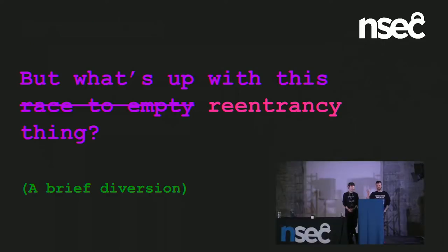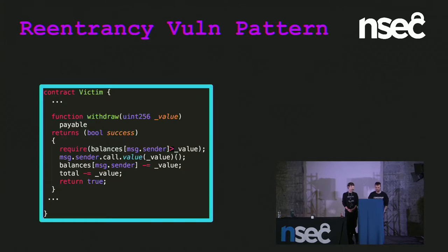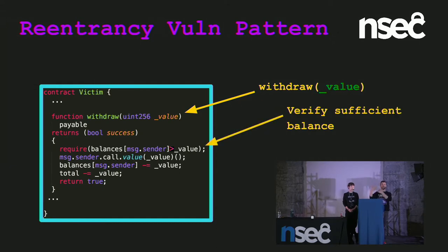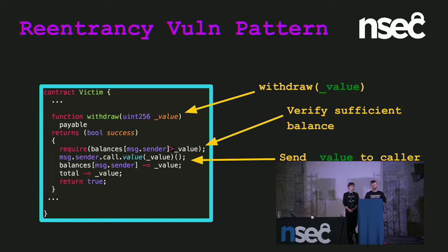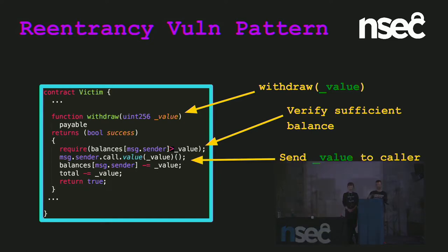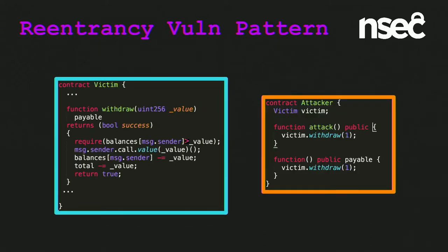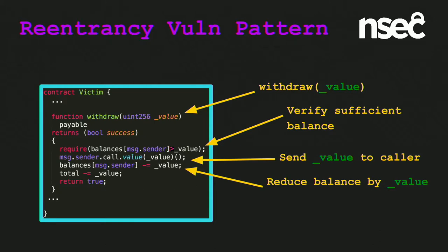Before continuing the saga, I'll describe the reentrancy vulnerability pattern itself. Here we have a victim contract with a withdraw function. You ask to withdraw a value you have in this contract. The contract checks that you have sufficient balance, and sends the value to the caller — message.sender. Then it reduces their balance by the value. Seems pretty good, right? But there's something quite subtle: we have sent the value before we actually reduce their balance. And this is going to get us into a lot of trouble.